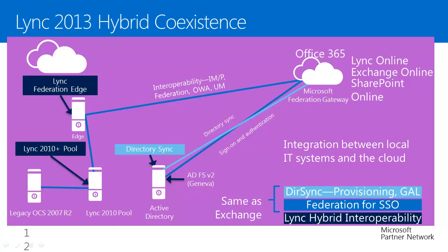Let's take an example. One on-premise user wants to communicate with an online user. The on-premise user notifies the front-end server, part of the on-premise pool. It verifies and confirms that the user has been migrated to cloud. It then forwards the connection to the on-premise edge server, which routes the traffic to the online cloud. The online cloud notifies the respective user regarding the request, and the connection is established between the on-premise user and the cloud user. All signaling traffic proxies via the on-premise edge server.